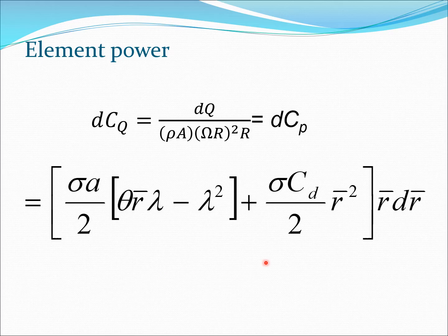You can clearly see that the CD part of the expression is completely coming from drag and this will become a source of the profile power. The part here is essentially coming from lambda or inflow, so this is the part which becomes the source of induced power. In general, these quantities theta, a, sigma, and to some extent even CD could be functions of r.